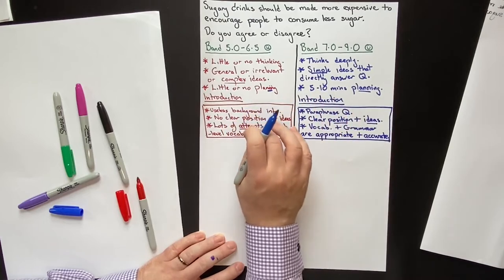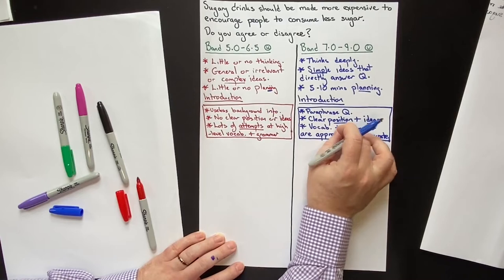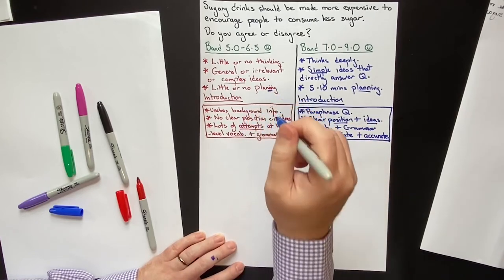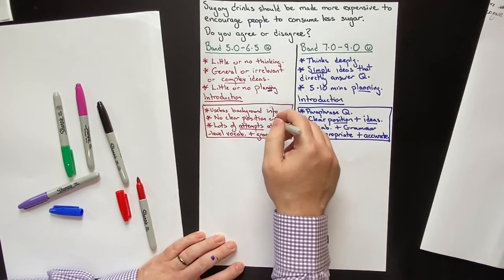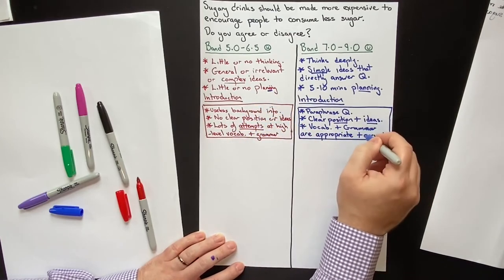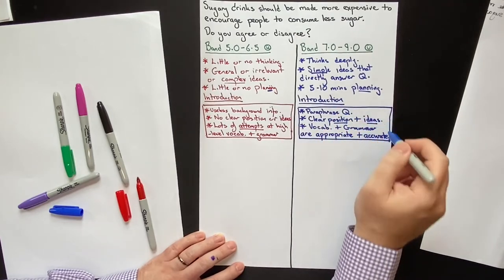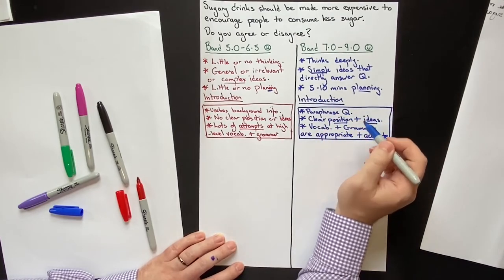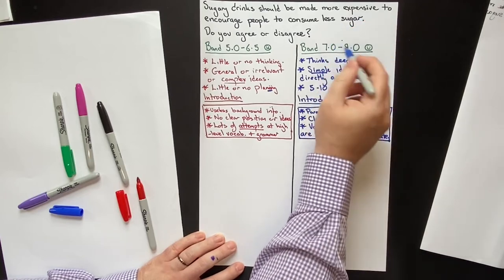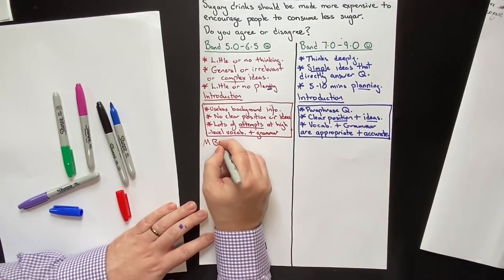The IELTS Writing Task 2 test is not a memorization test — it is a communications test. If someone moved to Toronto, London, or Sydney, the low-scoring student would not be able to clearly communicate with people, but the high-scoring student can. What is IELTS actually testing? It's testing: can you move to an English-speaking country and communicate with people clearly? That is the key to a Band 7, 8, or 9.